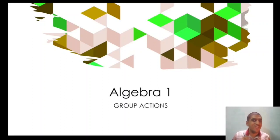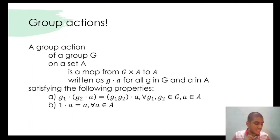We ended the last session with the definition of group action. A group action of a group G on a set A - note that there is no restriction here, any set A, it need not have anything to do with group G itself - is a map from G cross A to A written as G dot A.